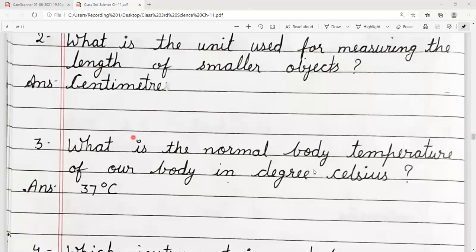Number three, what is the normal body temperature of our body in degree Celsius? Celsius pe poocha hai, toh answer hamara hoga 37 degree Celsius.